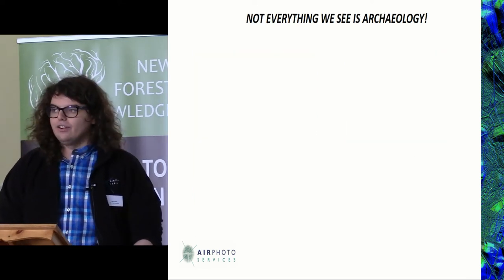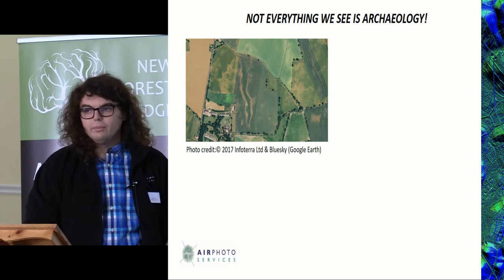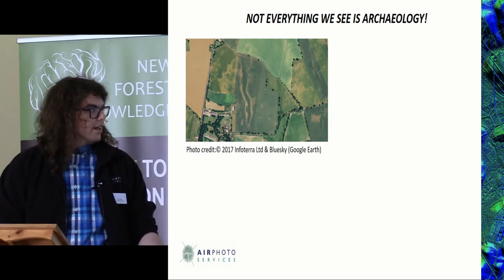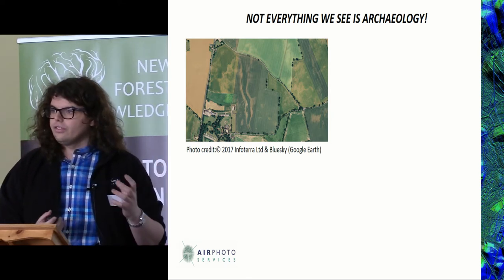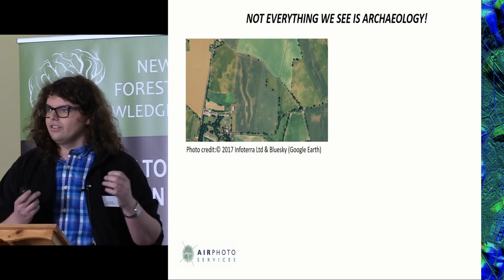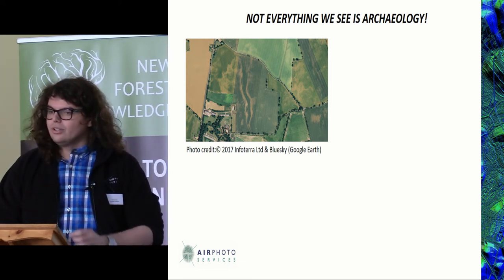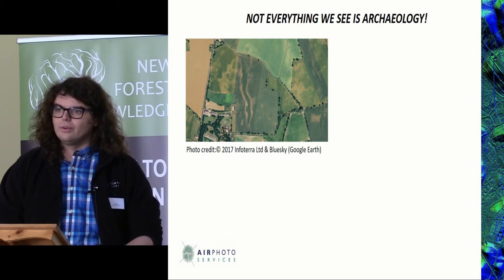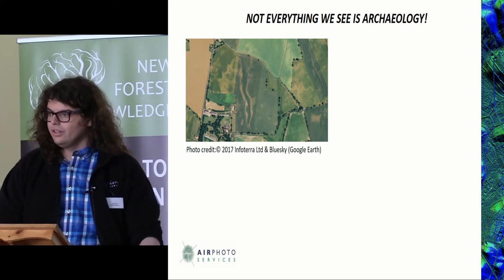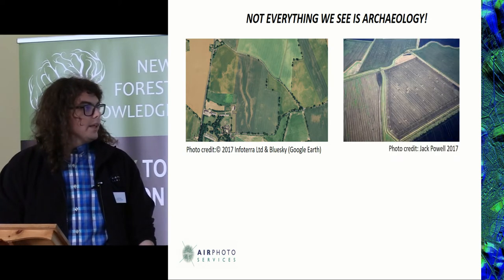Not everything we see in air photos is archaeological. We can see a lot of geological features such as palaeochannels, which we can map in depending on the survey remit. We can also see natural gravelling — gravel geologies can give the idea of pits and features. On large-scale complex crop mark sites running over such geology, you can suddenly lose the crop marks into the geological features. It's really important to have an understanding of the area's geology so you can distinguish what may be natural from what may be archaeological.